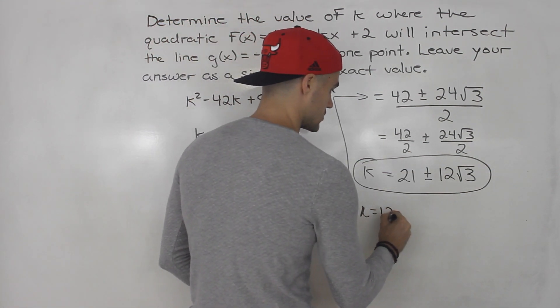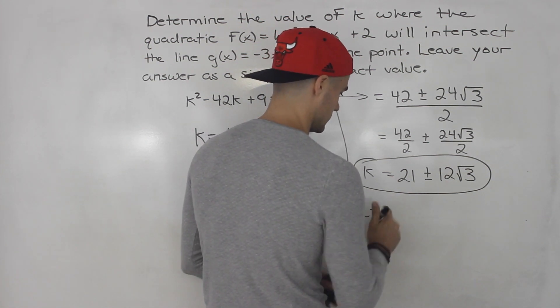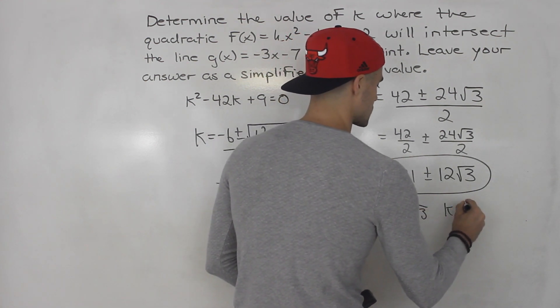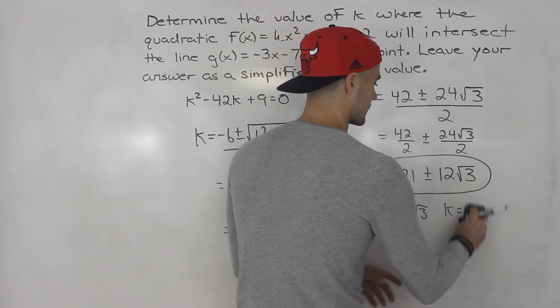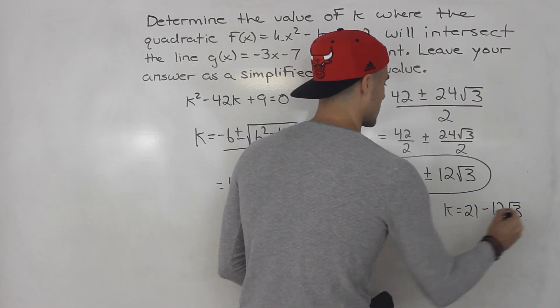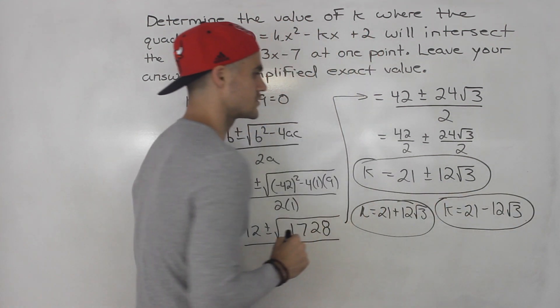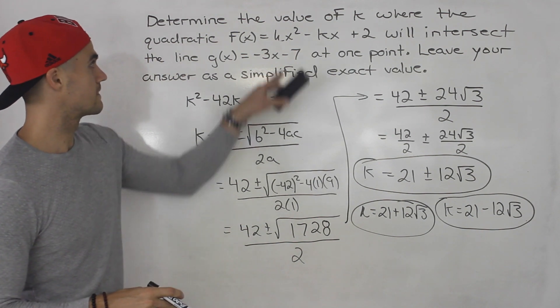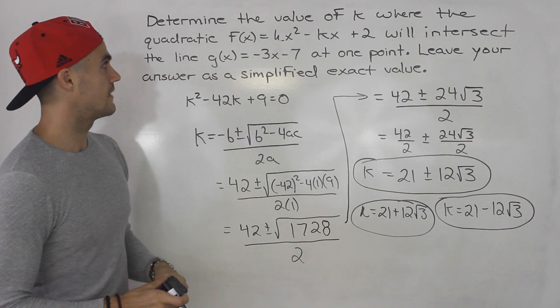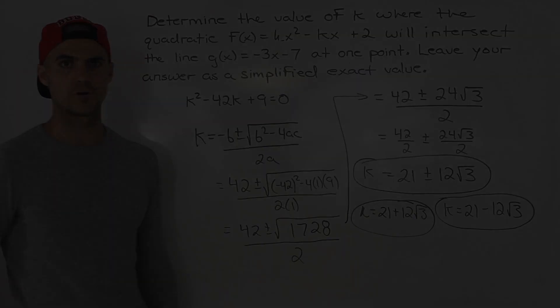So one of the answers for k, 21 plus 12 root 3. Or the other answer, 21 minus 12 root 3. So those are your two answers. Those are the two k values for this quadratic that would make this quadratic intersect with this line at one point.